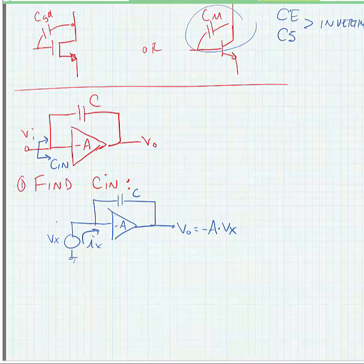So, what we can do now is find what the current flowing is. Now, if it's an ideal voltage amplifier, no current flows into the amplifier. All the current is going to flow through the capacitor. So, what we can write is that Ix is equal to Vx minus Vout divided by Zc, the impedance of the capacitor. And with a little bit of manipulation, we can show that Ix is equal to Sc times 1 plus A times Vx.